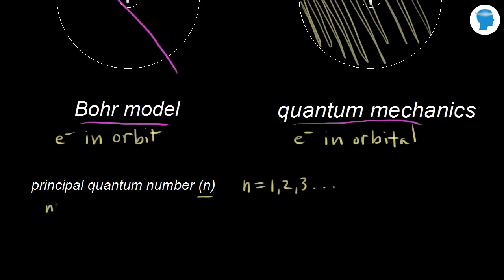The principal quantum number tells us the main energy level, sometimes referred to as a shell. As n increases, the average distance of the electron from the nucleus increases, and therefore so does the energy.